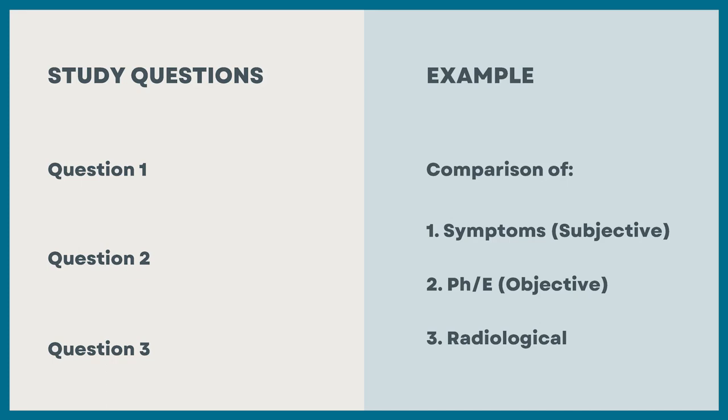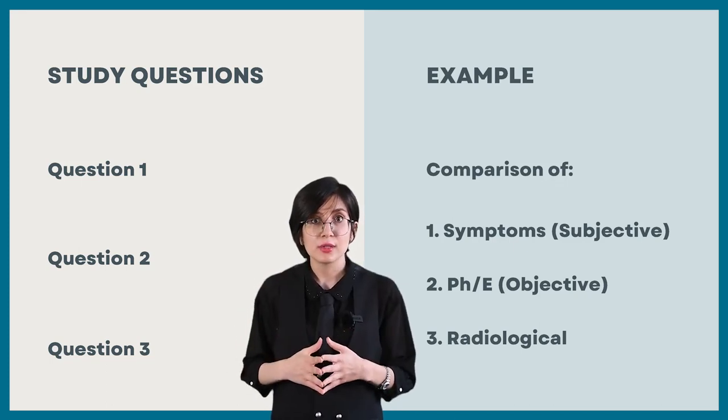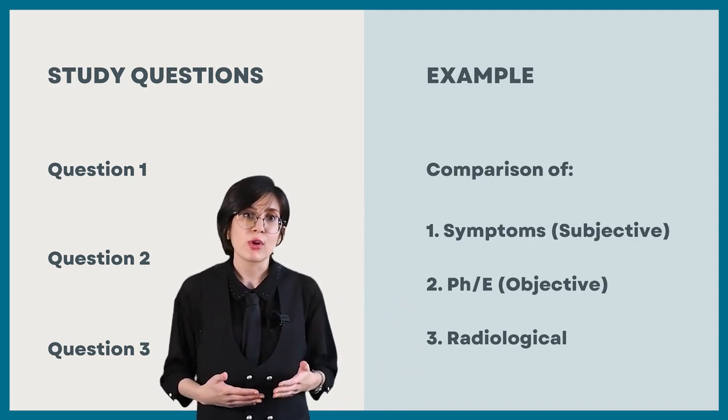In this example, it might go like this: Comparison of first, patient symptom relief or the subjective parameters like pain or patient reported disabilities. Two, the patient signs that you obtain based on your physical exam or objectively, like the joint range of motion, hand grip strengths, or physician-based questionnaires.